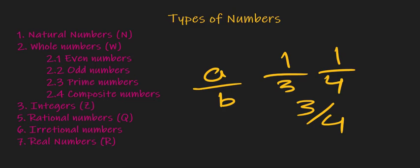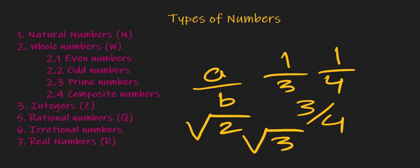Some examples of irrational numbers are, for example, the square root of 3. These are examples of irrational numbers.